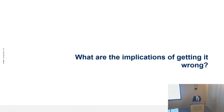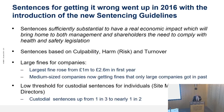I just want to touch on what the implications of getting it wrong are. You may be aware that in 2016 new sentencing guidelines were introduced. One of the key drivers is that sentences should be sufficiently substantial to have a real economic impact, which will bring home to both management and shareholders the need to comply with health and safety legislation. The key words for me are 'sufficiently substantial' and 'real economic impact.' If an organisation is found guilty, sentences are based on culpability — the degree to which they were responsible — the level of harm that people were exposed to, and company turnover. The larger the company, the larger the fine.